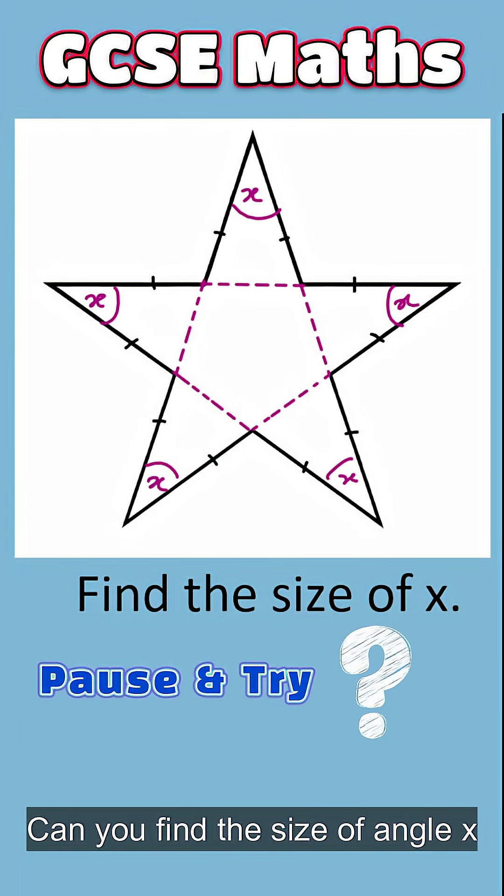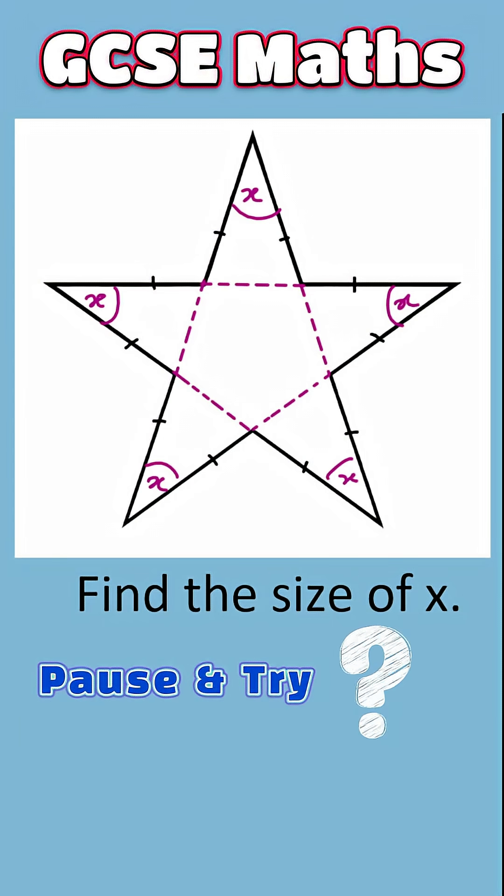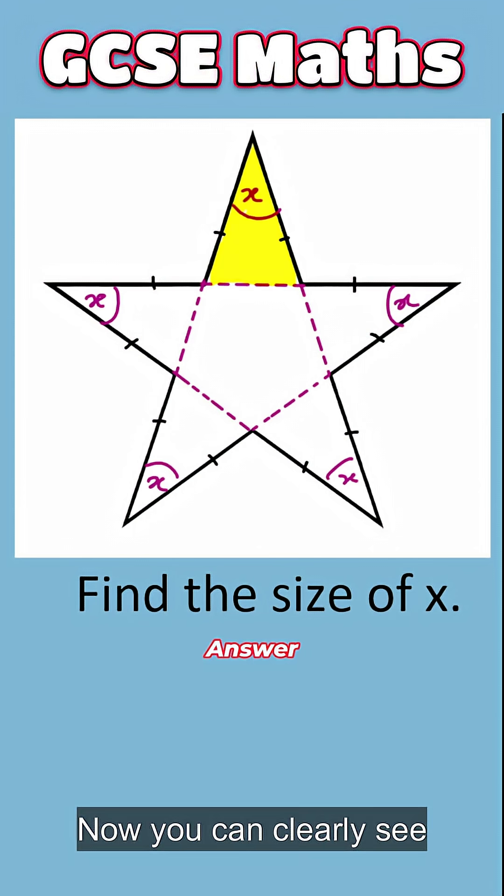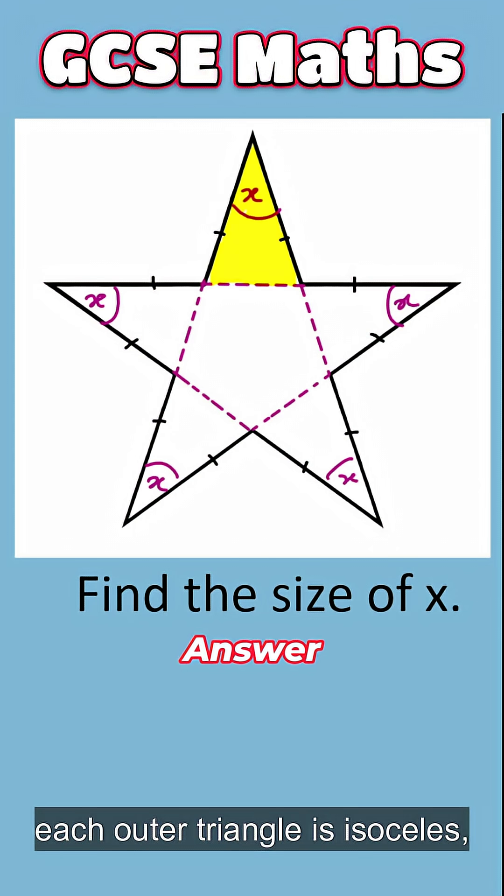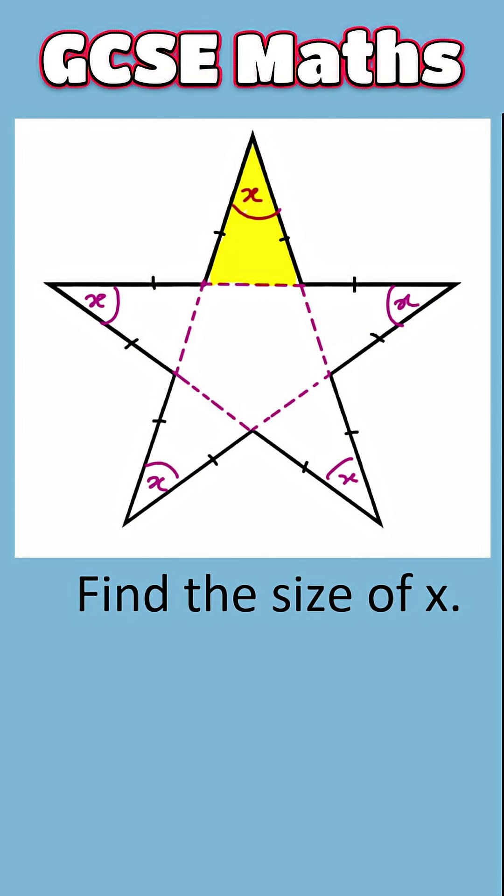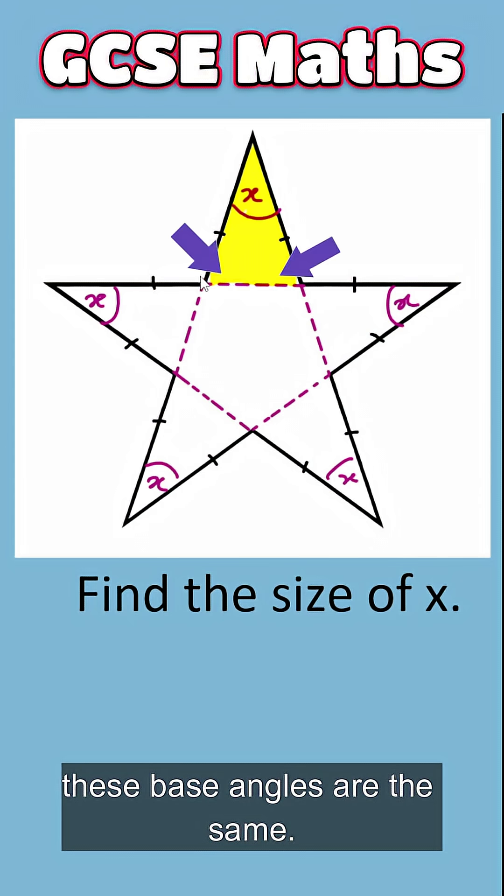Can you find the size of angle X in this star? Now you can clearly see each outer triangle is isosceles. So these base angles are the same.